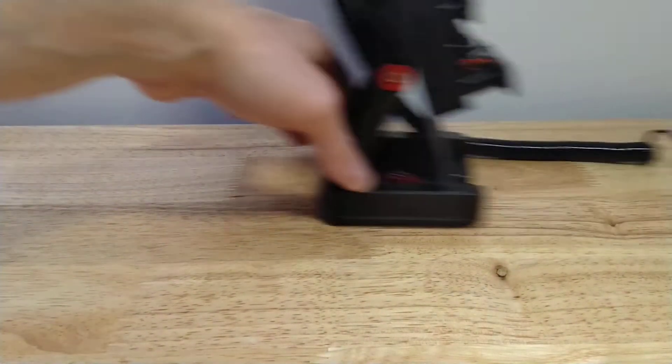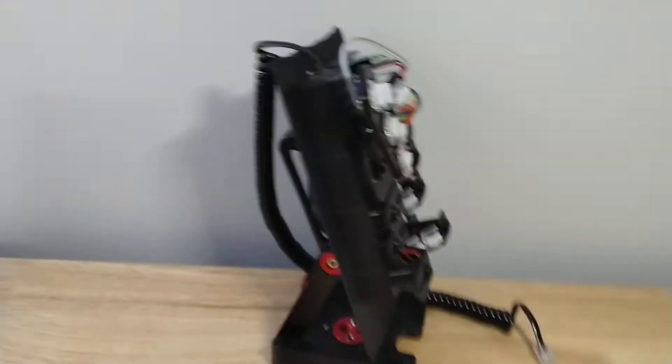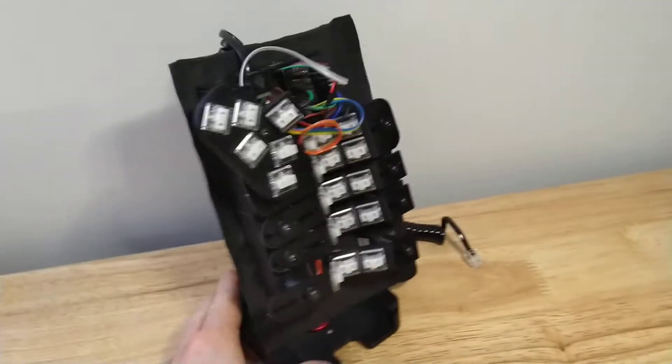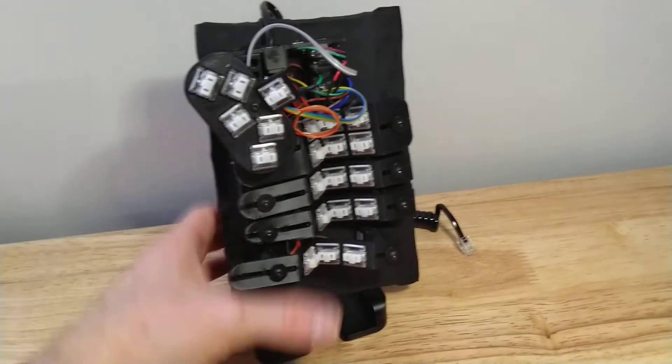So when that all gets put together, here's the right side. It looks like this. There's all the columns and the big thumb cluster.